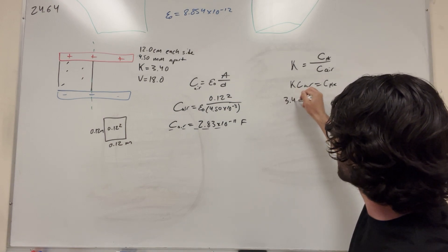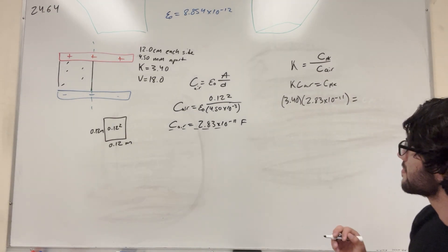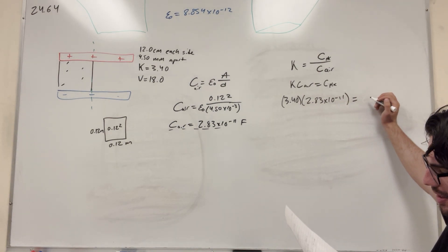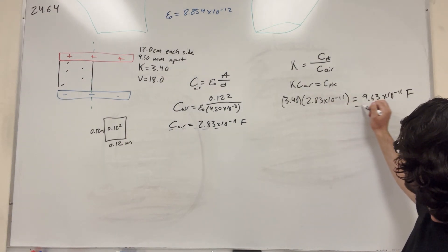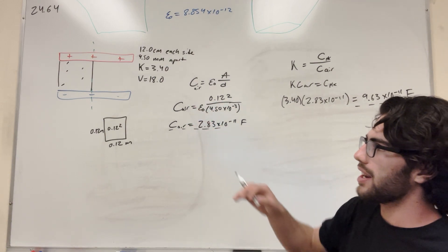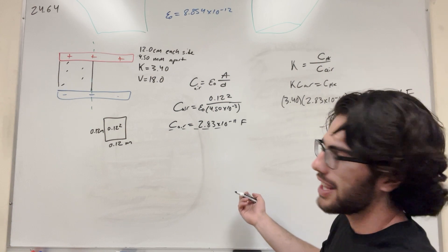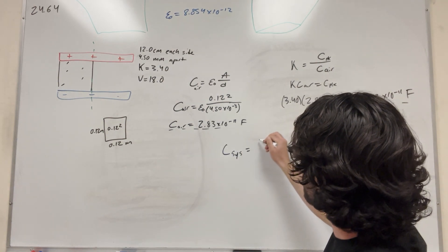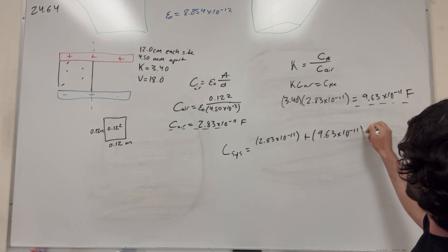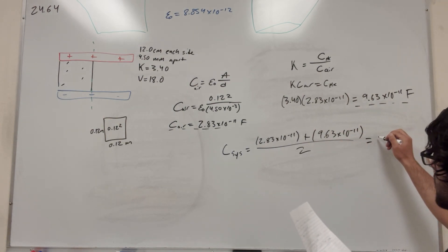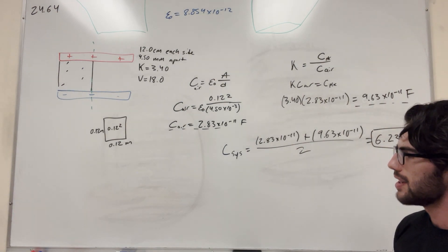Plugging in our numbers: 3.40 times 2.83 times 10 to the negative 11 gives us 9.63 times 10 to the negative 11 farads. Now we take the average of these two — we have 50% each — so C_system equals (2.83 times 10 to the negative 11 plus 9.63 times 10 to the negative 11) divided by 2, giving us 6.23 times 10 to the negative 11 farads. That's the answer to Part A.